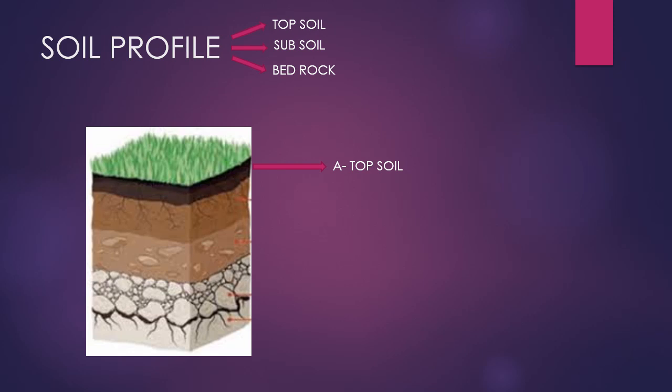The topsoil also contains water and air. B is called the subsoil. It is the middle layer of soil present below the topsoil and contains broken pieces of rocks. C is called the bedrock.